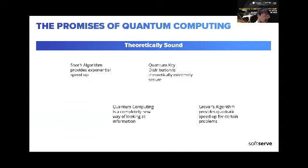The theoretically sound ones include things like Shor's algorithm providing exponential speedup, quantum key distribution being theoretically extremely secure — though there are some attacks that researchers are extremely aware of, and there is evidence to show it is extremely secure in some sense — quantum computing as a new way of looking at information, and Grover's algorithm providing quantum speedup. These are pretty safe claims.